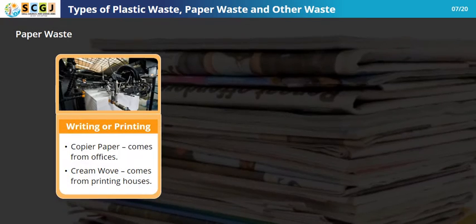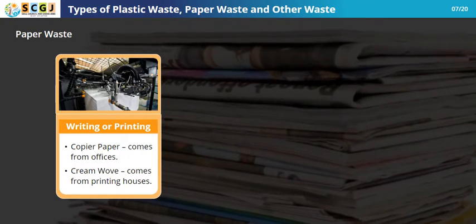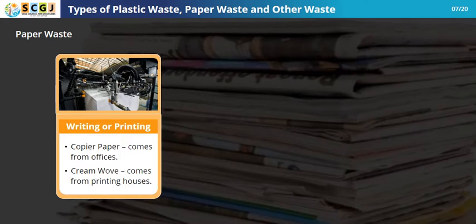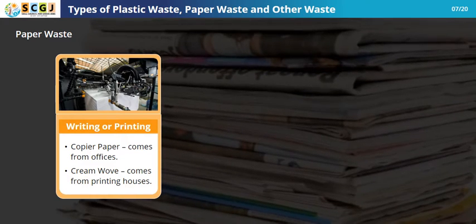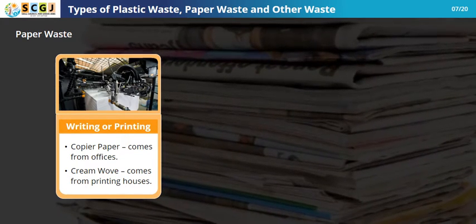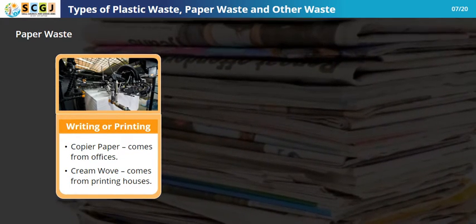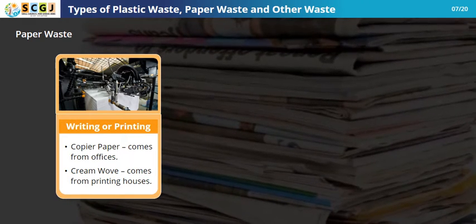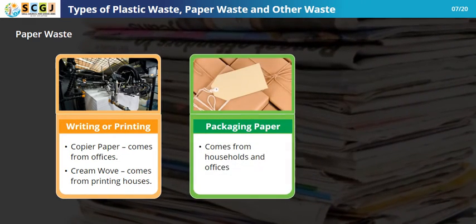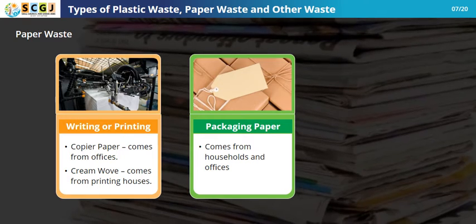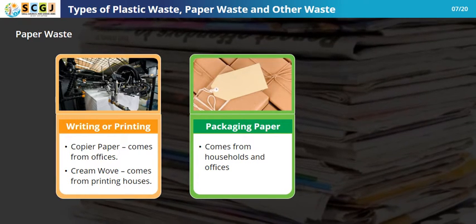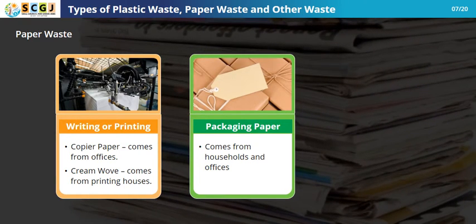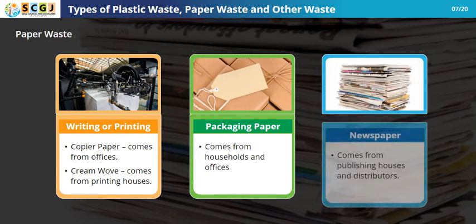Writing or printing paper waste includes copier paper from offices and cream wove paper from printing houses. Packaging paper waste includes waste paper from households and offices. Newspaper waste is also a distinct category of paper waste.